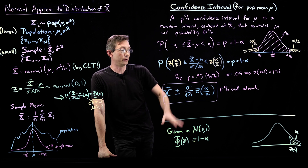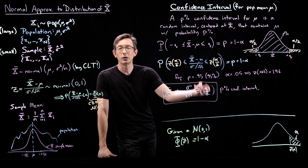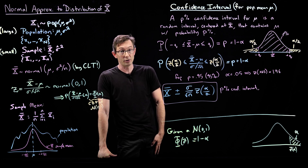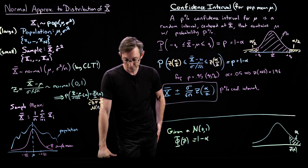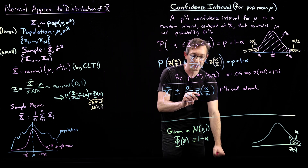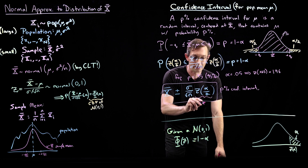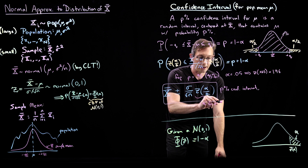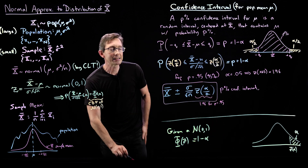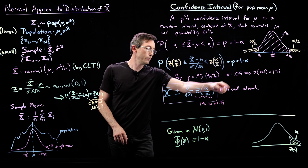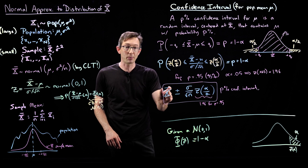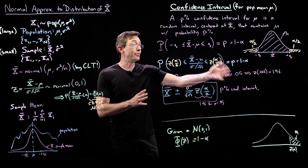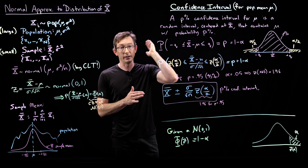This is very, very useful. This z of alpha over 2 is computable — you can look it up from the standard unit normal cumulative distribution function. For p equals 0.95, this is 1.96, which basically means you take 1.96 standard errors. So it's x-bar plus or minus 1.96 standard errors — that is a 95% confidence interval for mu.